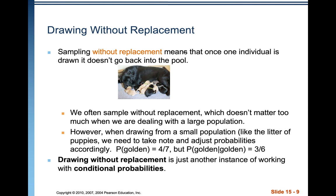However, when drawing from a small population like a litter of puppies, we need to adjust the probabilities accordingly. With four golden puppies out of seven total, the probability of drawing one golden puppy is 4/7. If you then reach in and grab another and it's golden — given that the first was golden — the probability of grabbing that second golden puppy is 3 out of 6, because there are only six puppies left and only three goldens remain. Drawing without replacement is another instance of working with conditional probabilities.